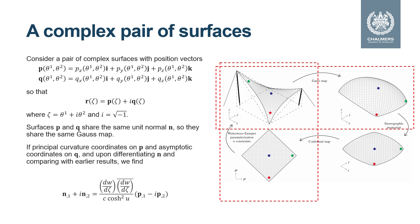Suppose that we seek principal curvature coordinates on p and asymptotic coordinates on q. Then, upon differentiating the surface unit normal as seen on the Gauss map and comparing with results that we presented in the paper, we can find the relation between the surface unit normal and the covariant base vectors of p.